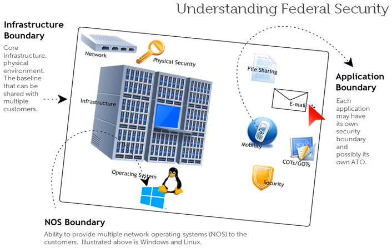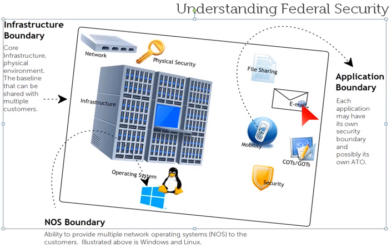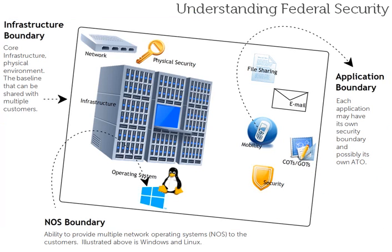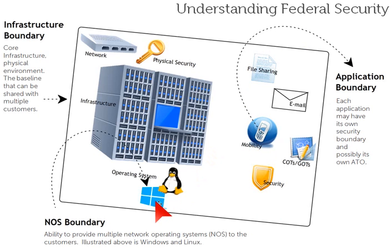Within the application boundary, you're going to find things or services that your customers are going to want, like email, file sharing, mobility, COTS - commercial off the shelf software or government off the shelf software - and security type of services. These are applications that are going to layer on top of the operating system. So it's a building block approach: you have your infrastructure, you have your operating system which lays on top of the infrastructure, and then you have your applications or services that lay on top of the operating system.